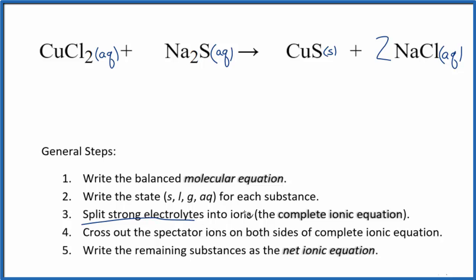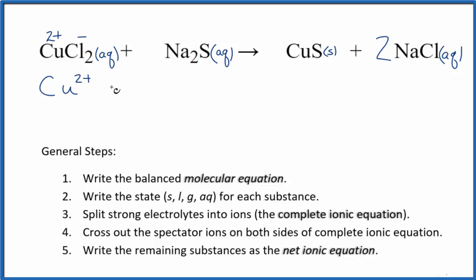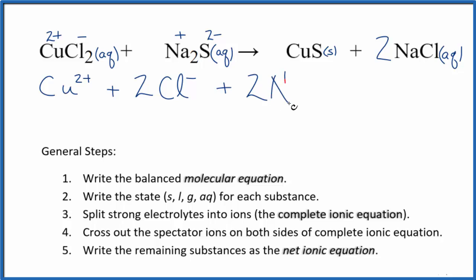Now we can split the strong electrolytes into ions for the complete ionic equation. Copper — we don't know its charge, but we do know the chloride ion is always 1 minus. Since we have two of them, copper has to be 2 plus. So Cu2+, and then we have two chloride ions, two Cl minus. Sodium is in group one on the periodic table — that's going to be 1 plus; sulfide ion is 2 minus. Two sodium ions and then we have the sulfide ion. These are the reactants in our net ionic equation.